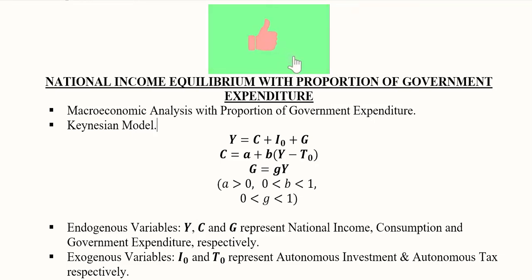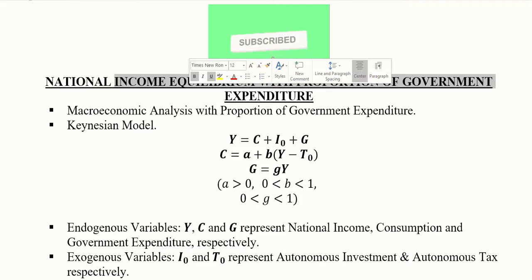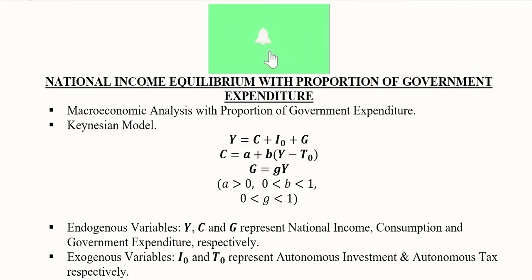Hi there, in this video we will learn about the national income equilibrium analysis but with a slight variation. The variation is that we have government expenditure which is not considered to be autonomous anymore. Instead it is basically a certain proportion or percentage of the national income. So this is the innovation that we will bring in this analysis: the macroeconomic analysis with the proportion of government expenditure that is, it is not autonomous anymore.